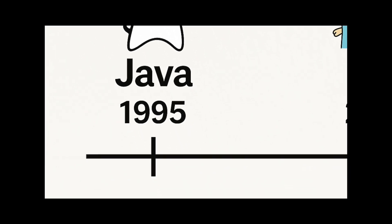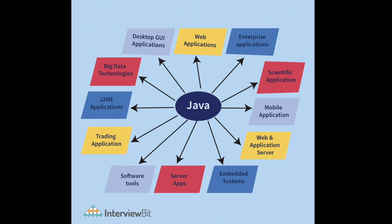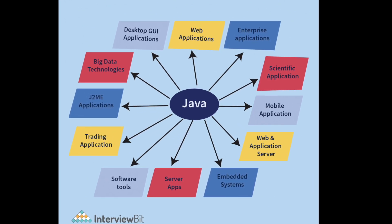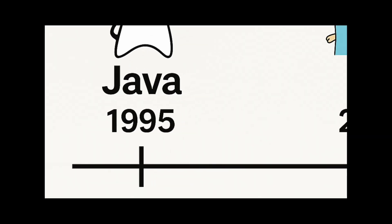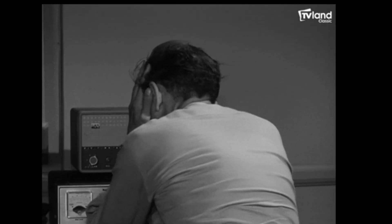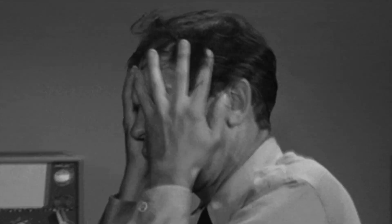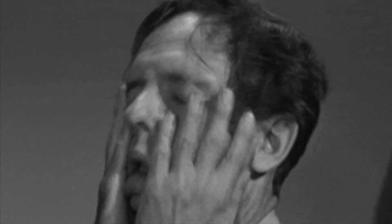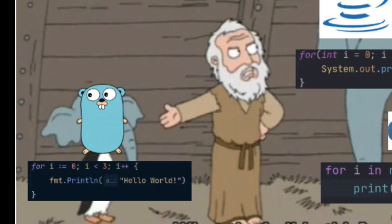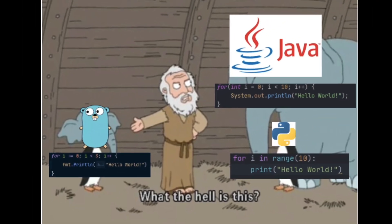Java dropped in 1995 and promised to write once, run anywhere — a revolutionary idea that helped it conquer enterprise backends worldwide. Fast forward to 2009, and Google engineers got tired of waiting for C++ to compile, so they built Go: a language designed for cloud-native development.